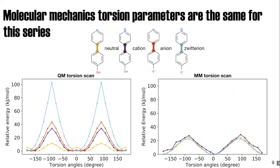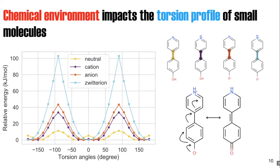If you take these molecules and run molecular mechanics torsion scans, as shown on the right, you see all these torsion scans look alike—which is not what we want. If you draw the resonance structure for this biphenyl, you can see that the central bond is actually part of the conjugated system and is effectively an aromatic bond.